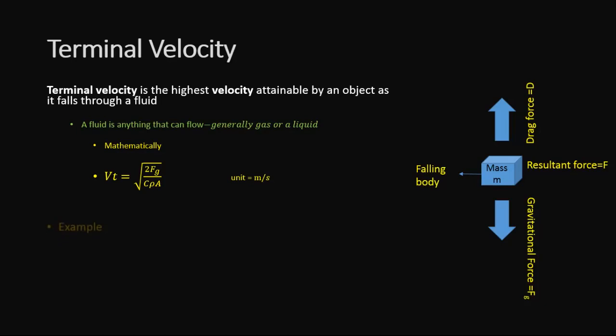For example, if we have a falling body of mass m, when a body falls from rest through air, the drag force D is directed upward. Its magnitude gradually increases from zero as the speed of the body increases. This upward force D opposes the downward gravitational force.